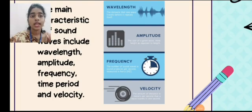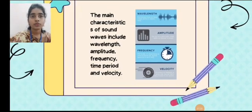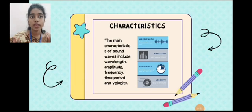On coming to velocity, the amount of distance in meters per second that a wave traverses in one second is known as the velocity. The main characteristics are wavelength, amplitude, frequency, and velocity.